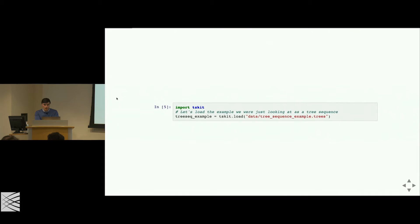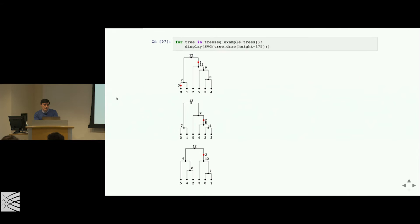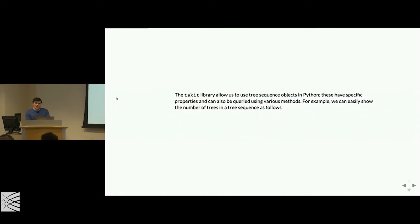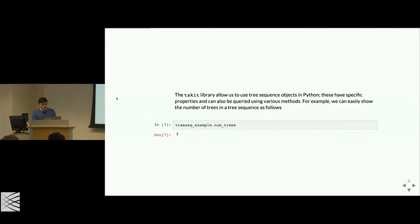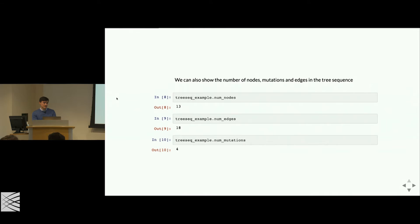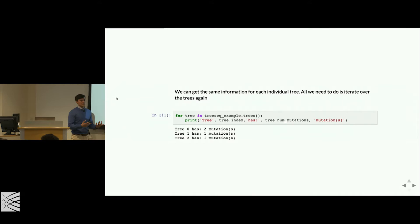With a tree sequence, the first thing you want to do is see what it looks like — we can draw it exactly as we've been drawing on the board. Using the `.trees()` function on the top-level class, we say: for tree in tree_sequence_example.trees, display it with SVG. That's exactly what we were just looking at. TS-Kit makes it easy to get summary statistics: how many trees are there? Three in our example. How many nodes? Thirteen. Edges: 18. Mutations: four. For each individual tree, the first has two mutations, the second has one, the third has one — exactly what we worked through.